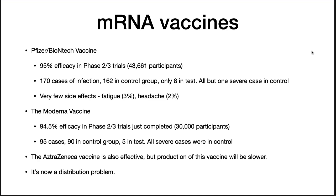The AstraZeneca vaccine has the advantage of being stored at refrigeration temperatures. The Pfizer vaccine requires very cold temperatures to remain stable, and the Moderna vaccine also requires freezing during distribution. Stopping the pandemic is now a solvable distribution problem. A recent Gallup survey showed that 58% of Americans would be willing to get the vaccine when it becomes available. While this number is lower than ideal, it is expected to climb as education campaigns ramp up and vaccination begins.